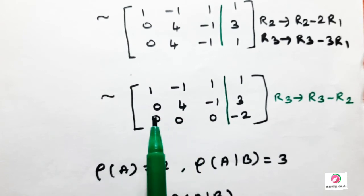Rank of A is equal to 2. There are two non-zero rows.